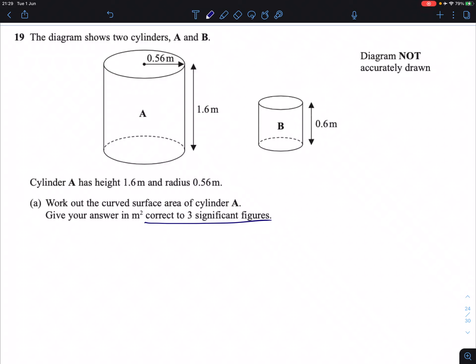Question 19. The diagram shows two cylinders A and B. Cylinder A has a height of 1.6 and a radius of 0.56 meters as shown. Work out the curved surface area of cylinder A.